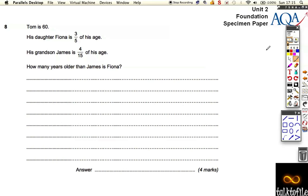Right, question 8. Question 8 on this paper gives us that Tom is 60, his daughter is three-fifths of his age, and his grandson James is four-fifteenths of his age. How many years older than James is Fiona? Well,